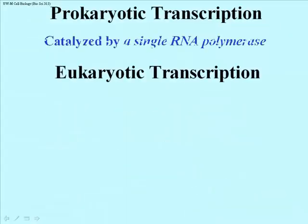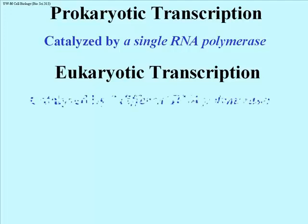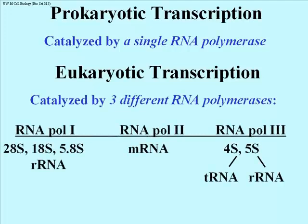Prokaryotic transcription is catalyzed by a single RNA polymerase responsible for transcribing all three major kinds of RNA — messenger, transfer, and ribosomal — in a bacterial cell like E. coli. Eukaryotic transcription is catalyzed by three different RNA polymerases: 1, 2, and 3. RNA polymerase 1 makes three ribosomal RNAs: the 28S, 18S, and 5.8S. RNA polymerase 2 transcribes messenger RNA. RNA polymerase 3 transcribes transfer RNAs and the 5S ribosomal RNA. We will revisit these polymerases and their activities in much more detail.